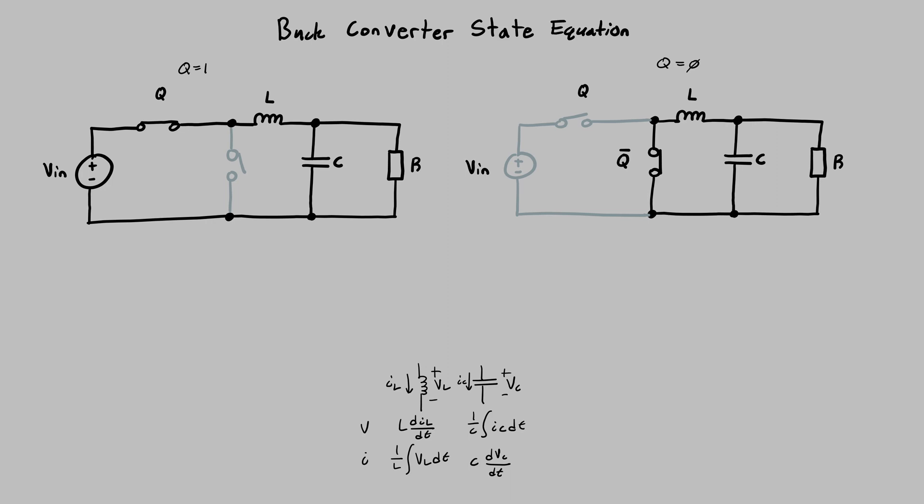So for the state equation derivation, you actually want to split the converter into two parts. One with the top switch closed and one with the bottom switch closed only. And you'll solve these for the state equations in each circuit, each circumstance. And then you can figure out where to include this Q function in the state equation.